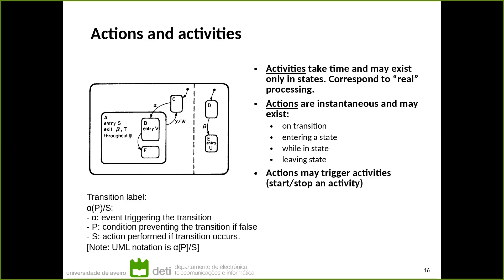Throughout the state, whenever a state is active, I have this X action happening. Notice that this may define the interaction between different state machines — for instance, when this system leaves the A state it executes action beta, and this action is an event in the transition from D to E. Every transition has a label with the event, the condition, and the action. In Harel statecharts parentheses are used; UML uses square brackets instead, but the idea is exactly the same.